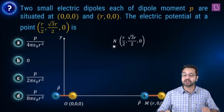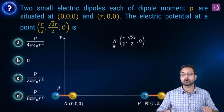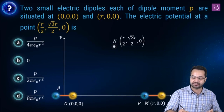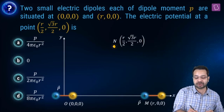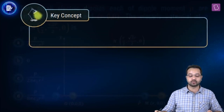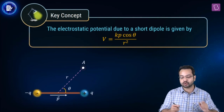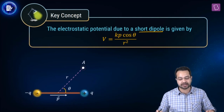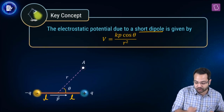Two small electric dipoles, each of dipole moment P, are situated at (0,0,0) and (R,0,0). The electric potential at a point (R/2, √3R/2, 0) is to be found. Since these are small electric dipoles, the electrostatic potential due to a short dipole is given by V = Kp·cosθ / R², where P is the dipole moment Q×2L, R is the distance from the center of the dipole to the point, and θ is the angle R makes with the direction of the dipole.